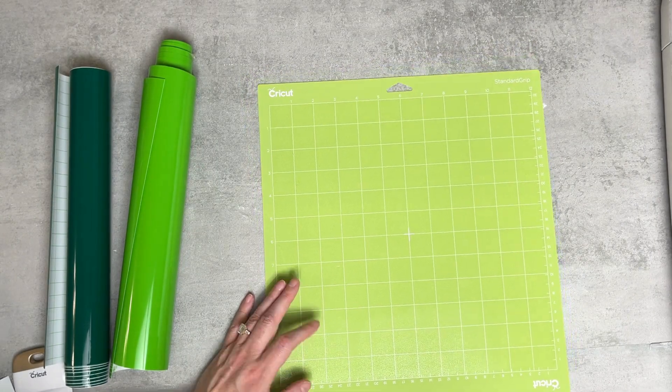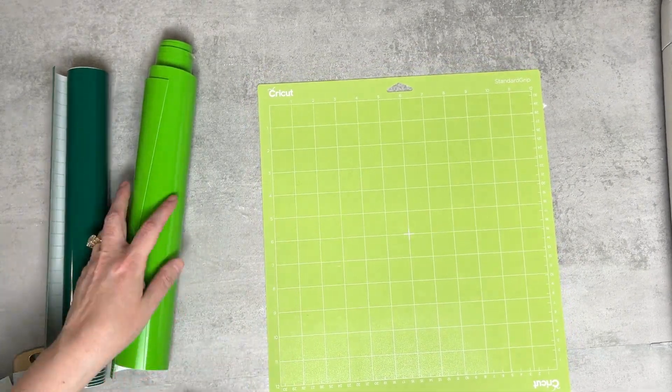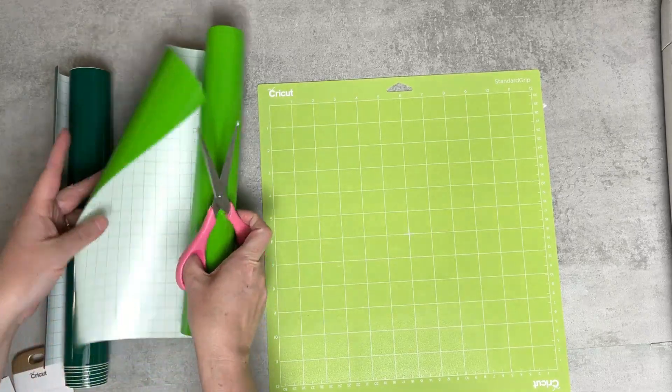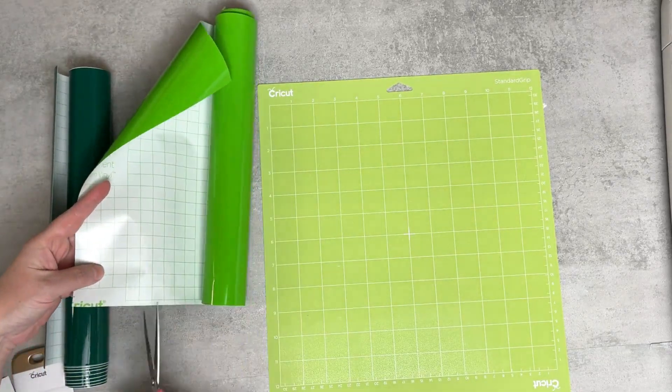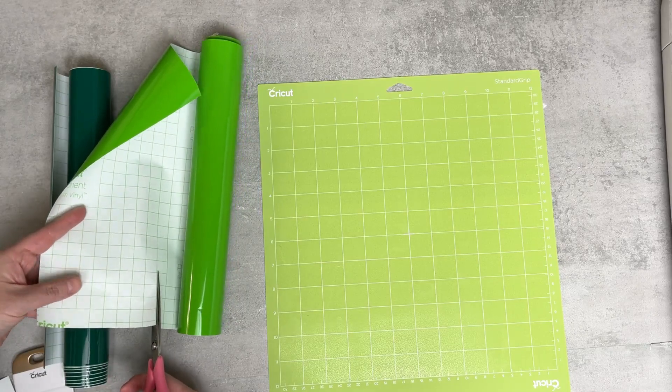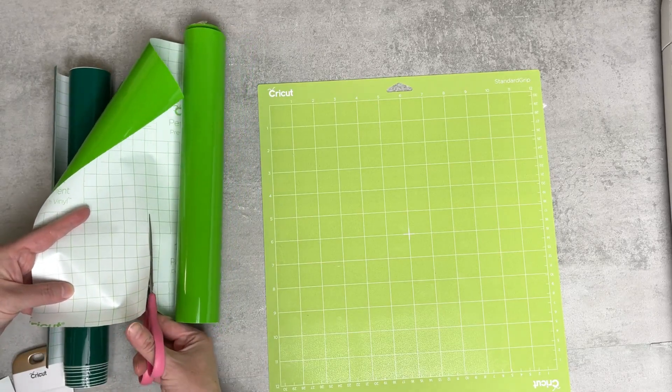If you have any scrap material, this is a great project for it. Because the decals are so small, you really don't need a lot of material. I'm just going to cut out a small section, and we're going to go ahead and apply this to the mat.